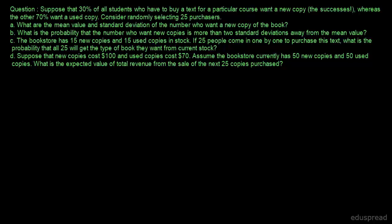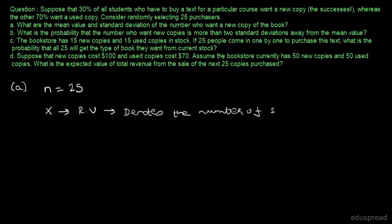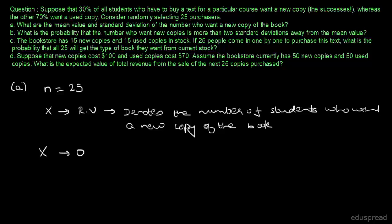Let's write down the information provided. n is equal to 25, and let x be a random variable that denotes the number of students who want a new copy of the book. The possible values that x can take start from 0 and go till 25, giving 26 possible values. Since 30% of students want a new copy, this is our success, so P equals 0.30 and Q equals 0.70.